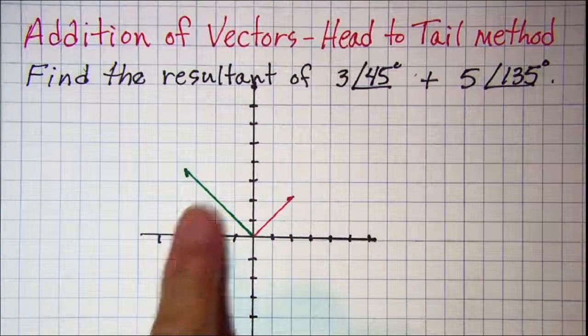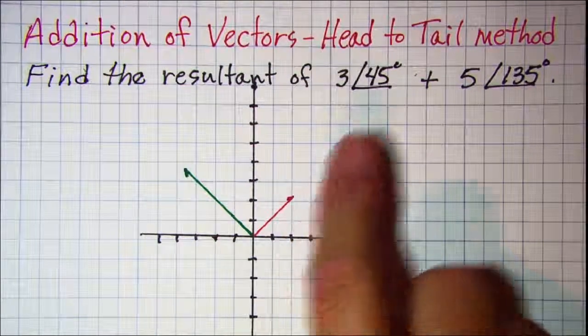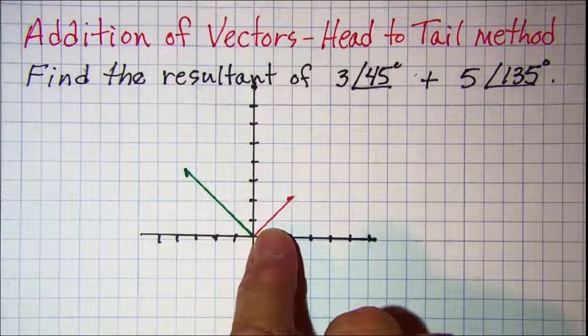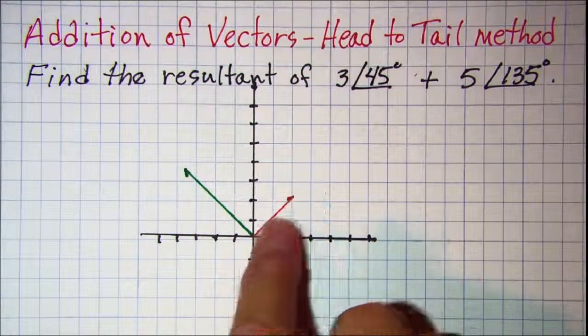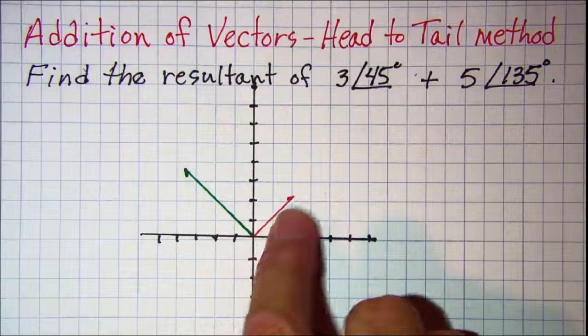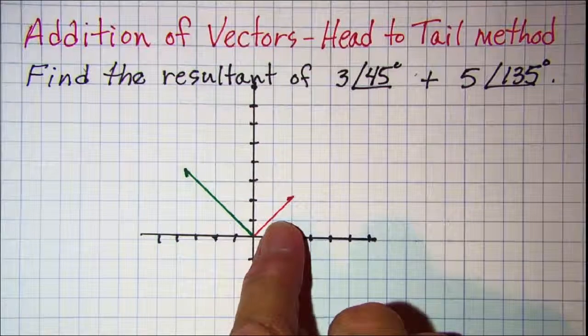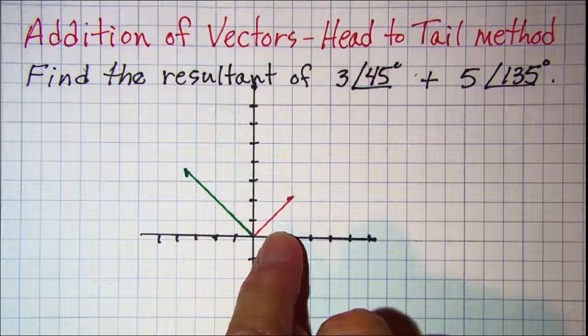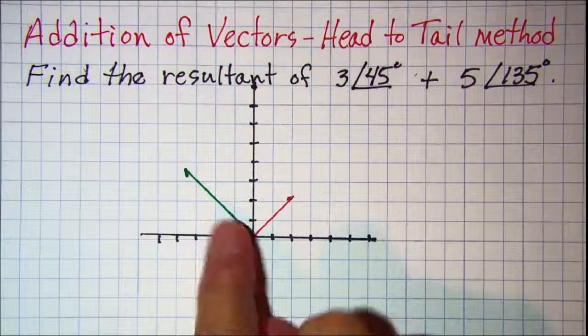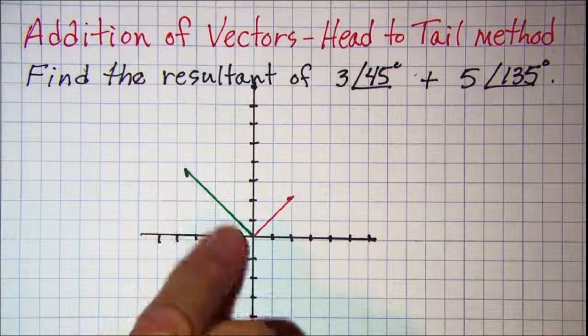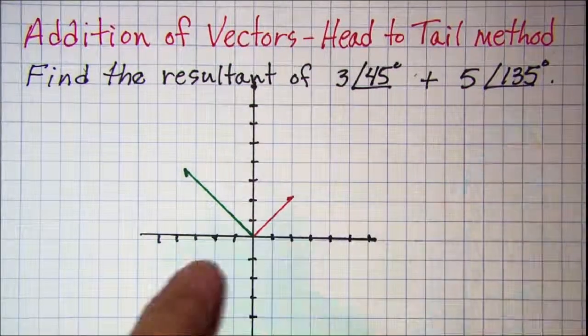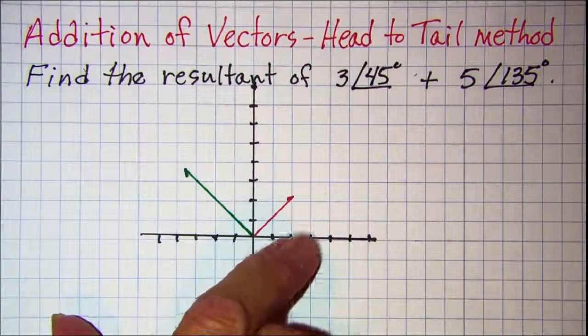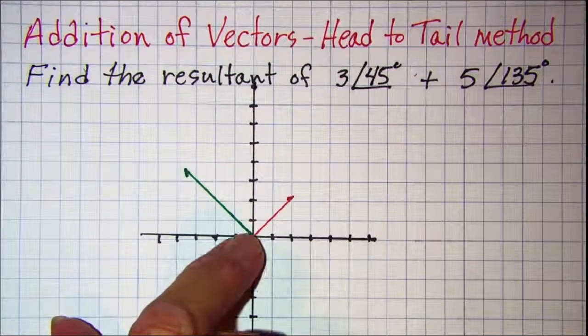Now I've shown both of these vectors here on this coordinate plane. The 3 at 45 is here. The grid is 1 quarter inch squares, so this magnitude or the length of this vector is 3 quarters of an inch long, and the angle I've measured at 45 degrees. Both of these vectors are oriented at the origin. The green vector is the 5 at 135. The magnitude is 5 units and the angle from the positive x axis is 135 degrees.